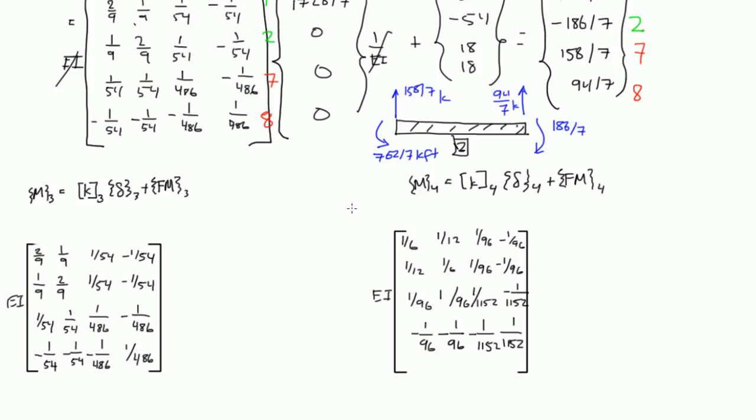All right, welcome back to the final video of this incredibly long stiffness method example. Here we're going to solve for M3 and M4 and figure out what the internal reactions are for members 3 and 4, or elements 3 and 4. Here I just drew the K matrices for members 3 and 4, just to save a little bit of time.